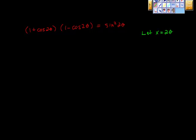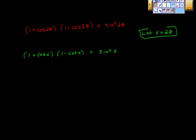I'm going to go back and in every place I find 2 theta, I'm going to put an x in. It makes it much simpler. So: 1 plus cosine x times 1 minus cosine x is equal to sine squared x. We have to remember to go back and re-substitute at the end, so keep that in mind.